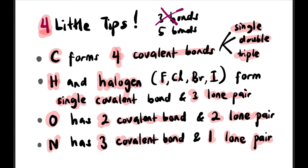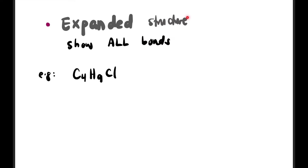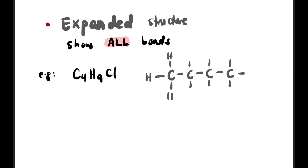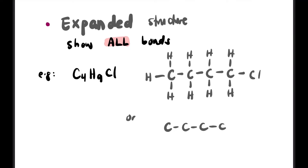Remember: not less than three, not more than five — must be four. Now let's learn how to draw expanded structure. Expanded structure must show all bonds involved. For example C4H9Cl: carbon stays in the middle, H and Cl go at the ends. We add each bond — carbon to carbon — with one Cl either at the end or in the middle depending on the question. The important thing is all bonds must be shown; lone pairs don't need to be shown, but bonds must be shown.